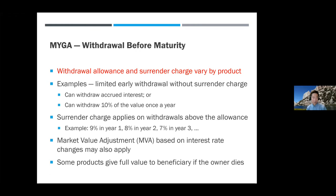There's also something called a market value adjustment — just like a bond, if you want to withdraw and prevailing interest rates have gone up and the bond value is down, they take another haircut off the value you can withdraw. If you die during the term, some contracts will give the full value to the beneficiary; some will not, and all the surrender charges and market value adjustments still apply. If you're thinking of wanting to withdraw, read the terms and choose a product that allows some flexibility.